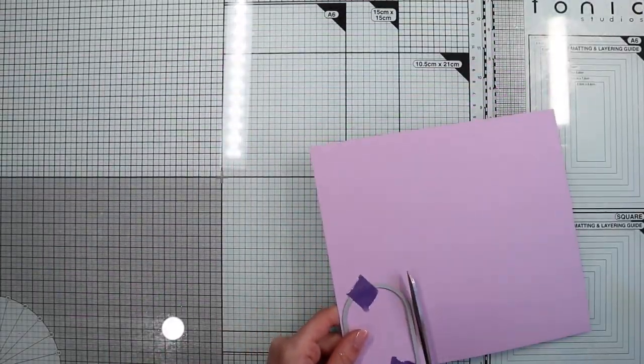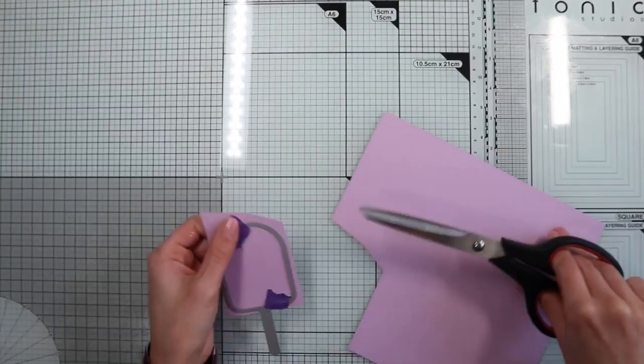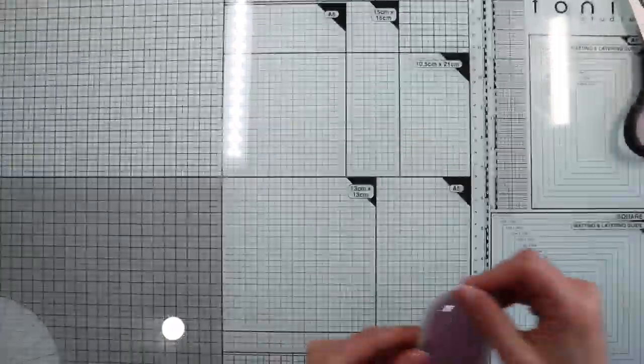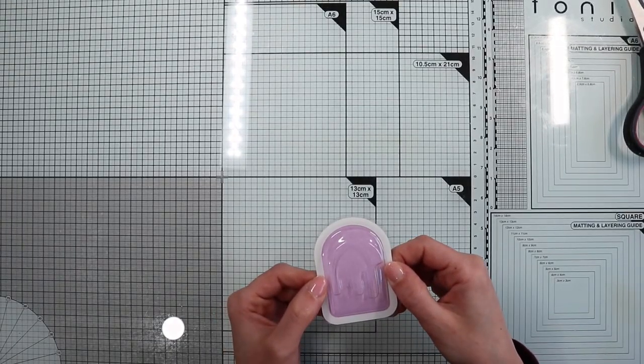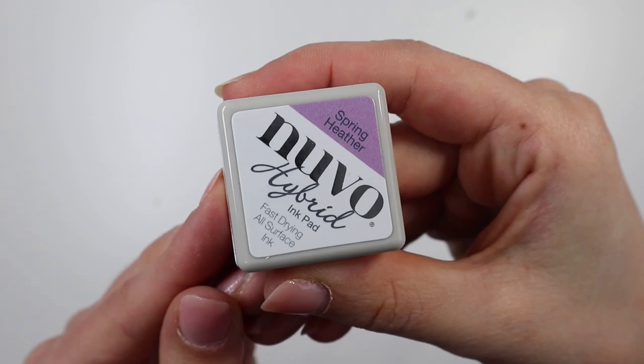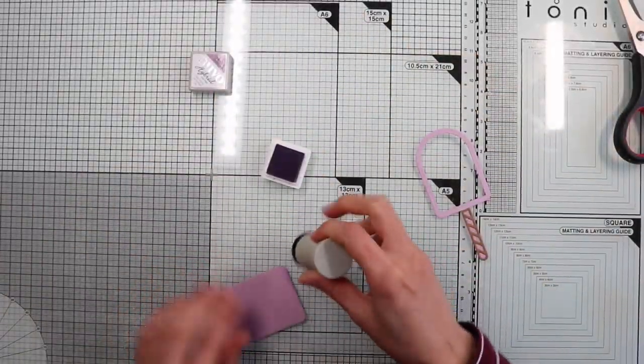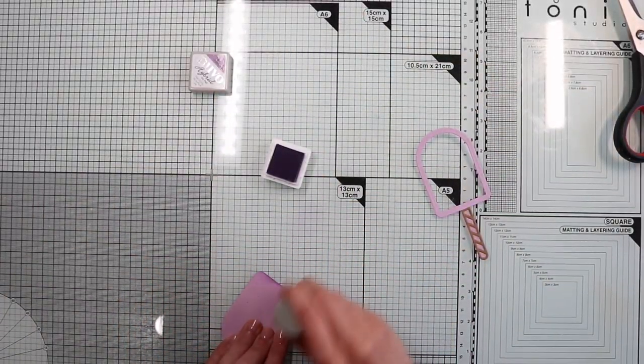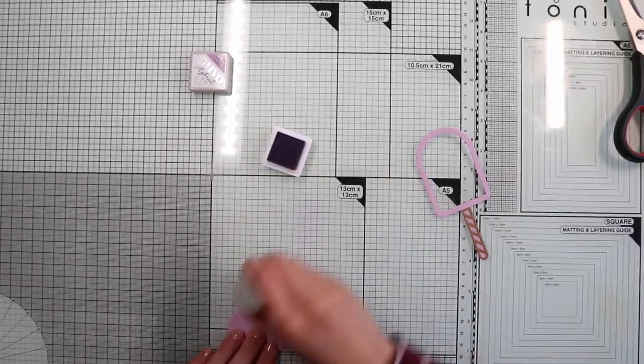Still on lilac paper, I'm going to die-cut the base of the ice cream. Then with violet ink, I'm going to create a shadow area on the bottom of the ice cream, blending the color with a blending tool.